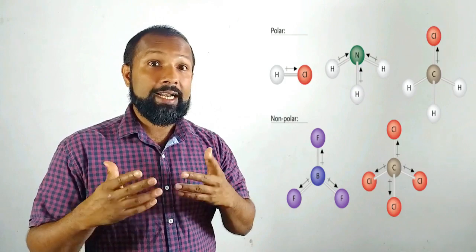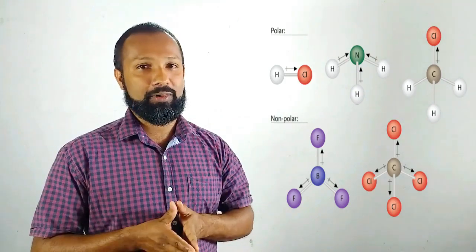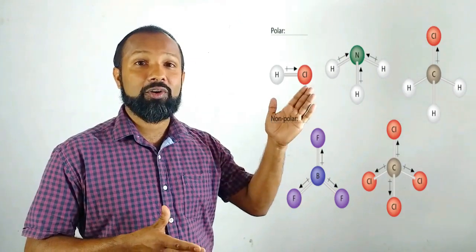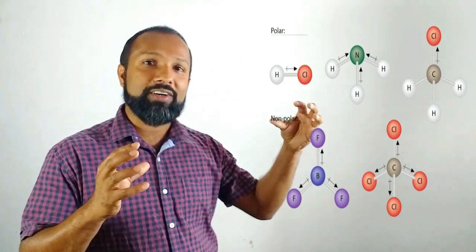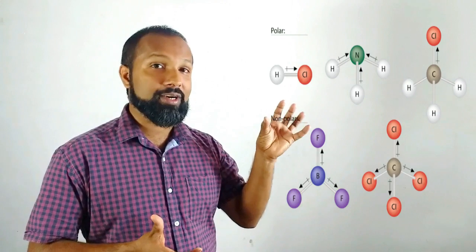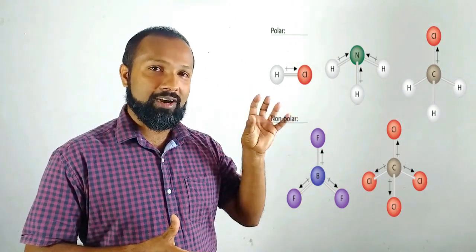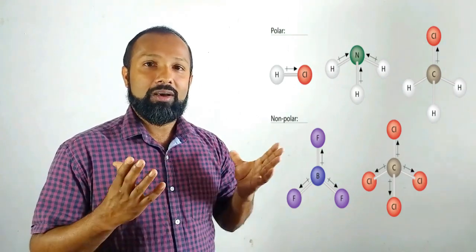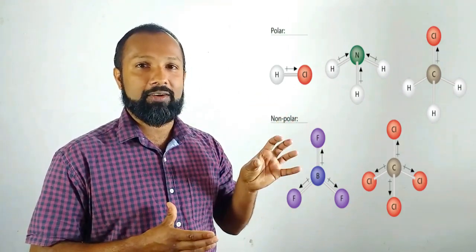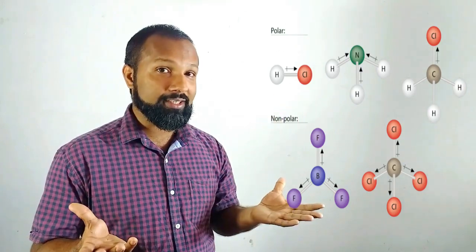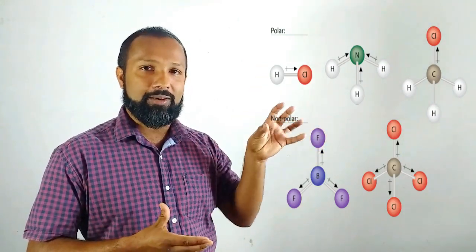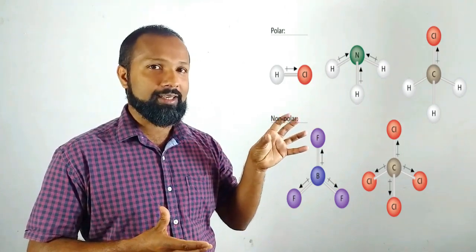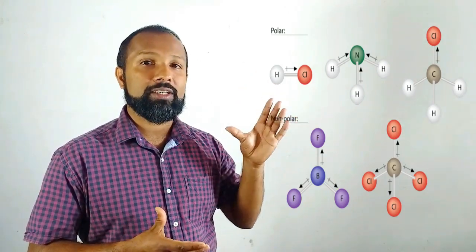Hydrochloric acid HCl is made up of hydrogen and chlorine — two different types of atoms. Carbon dioxide CO₂ is made up of carbon and two oxygen atoms. Methane CH₄ is made up of one carbon atom and four hydrogen atoms. Ammonia NH₃ consists of one nitrogen atom and three hydrogen atoms. In these examples you can observe two or more different types of atoms.